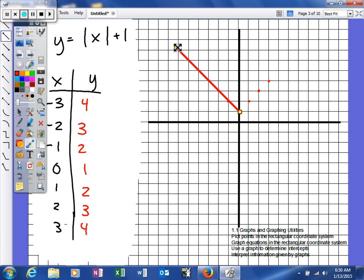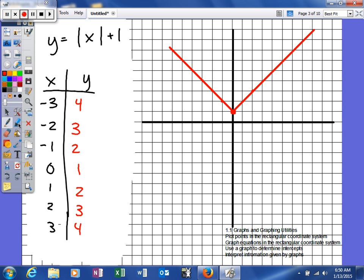As you can see, as we're graphing absolute value, the graph is actually a V. It should look a little something like that when we end up graphing it.